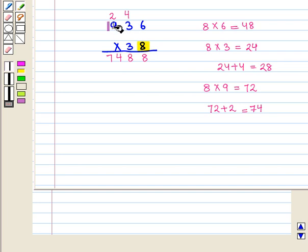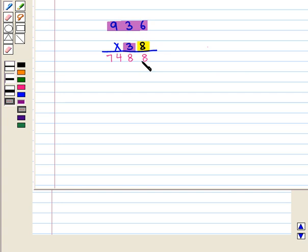Now we will multiply the same number by 3, starting from tens place. So we place 0 below the digit obtained at units place. 3 times 6 is 18.